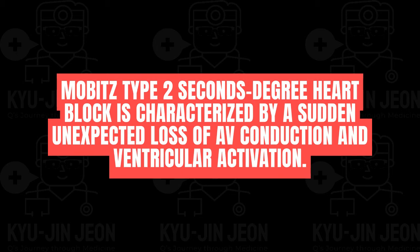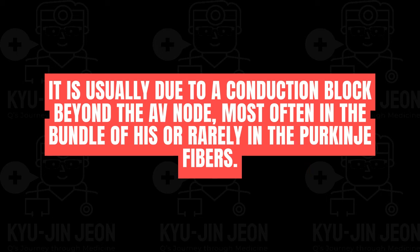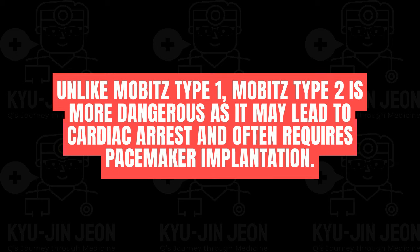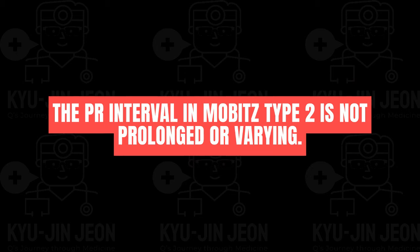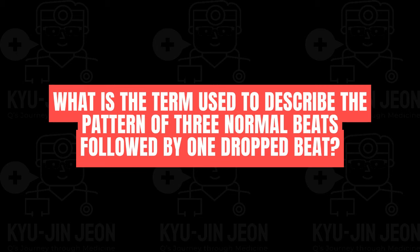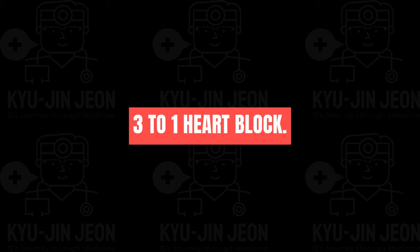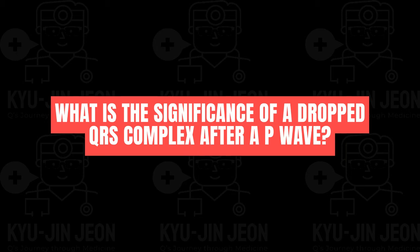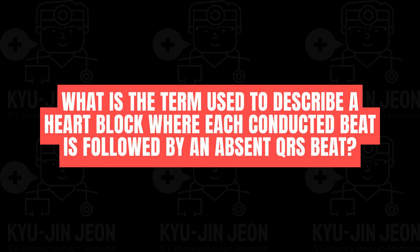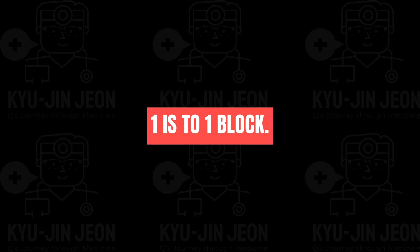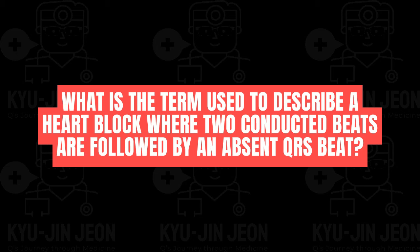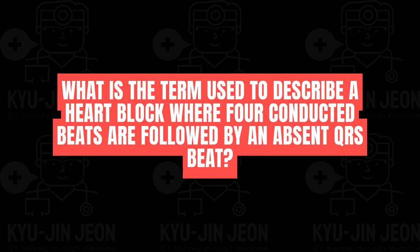Mobitz type 2 second-degree heart block is characterized by sudden unexpected loss of AV conduction and ventricular activation, usually due to a conduction block beyond the AV node, most often in the bundle of His. Unlike Mobitz type 1, Mobitz type 2 is more dangerous as it may lead to cardiac arrest and often requires pacemaker implantation — the PR interval is not prolonged or varying. Patterns include 3:1, 2:1, and 4:1 heart block depending on the ratio of conducted to dropped beats.